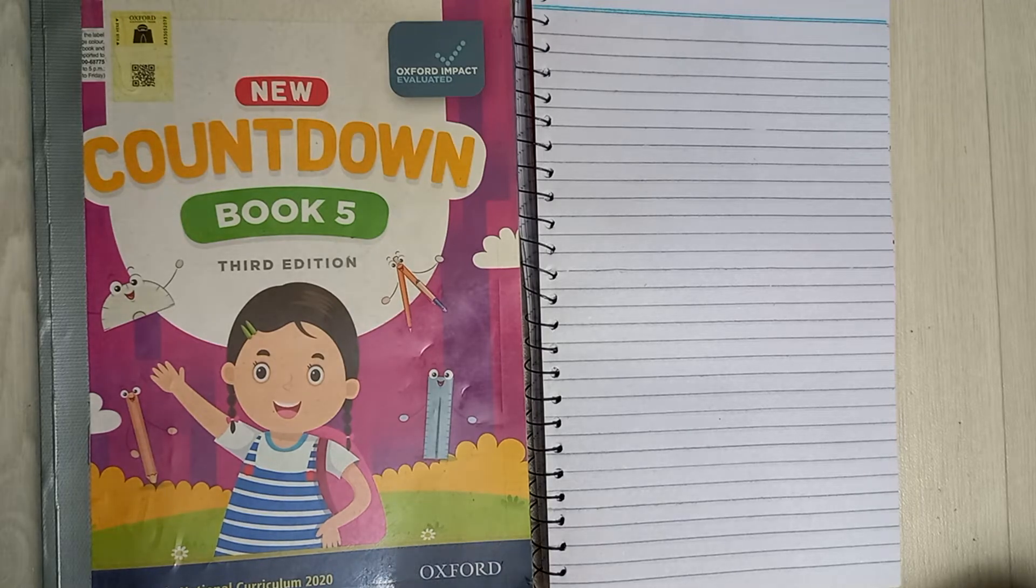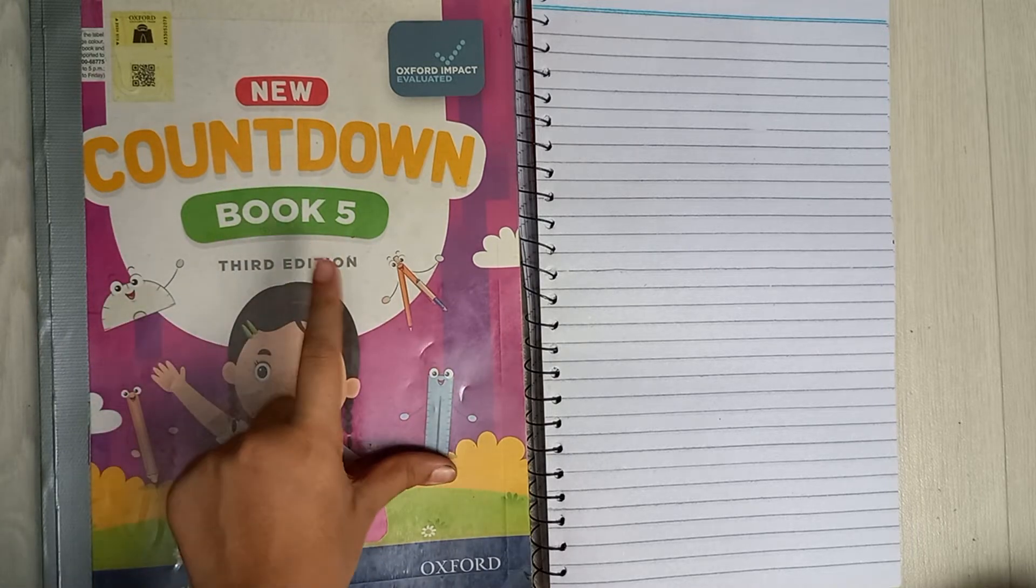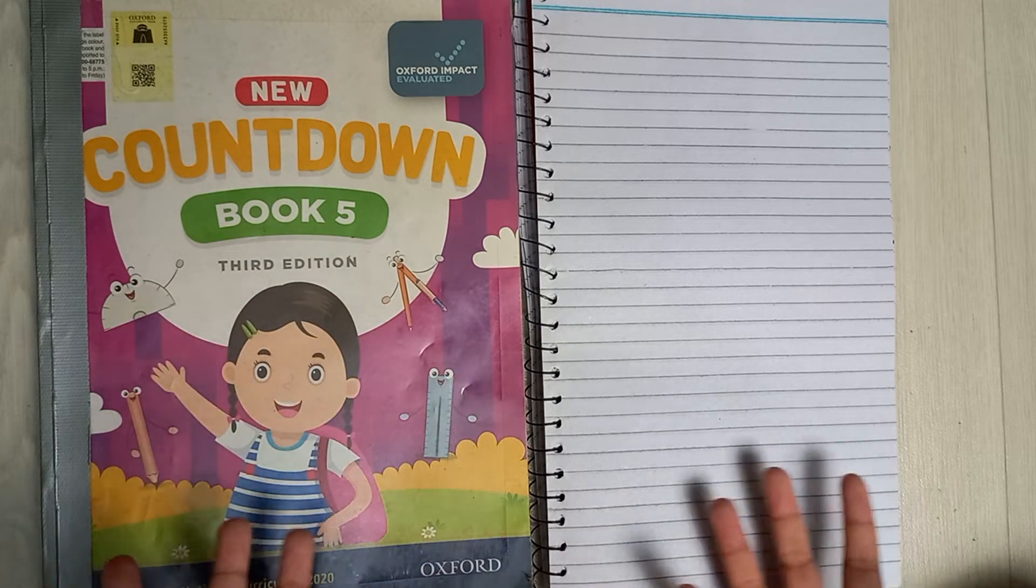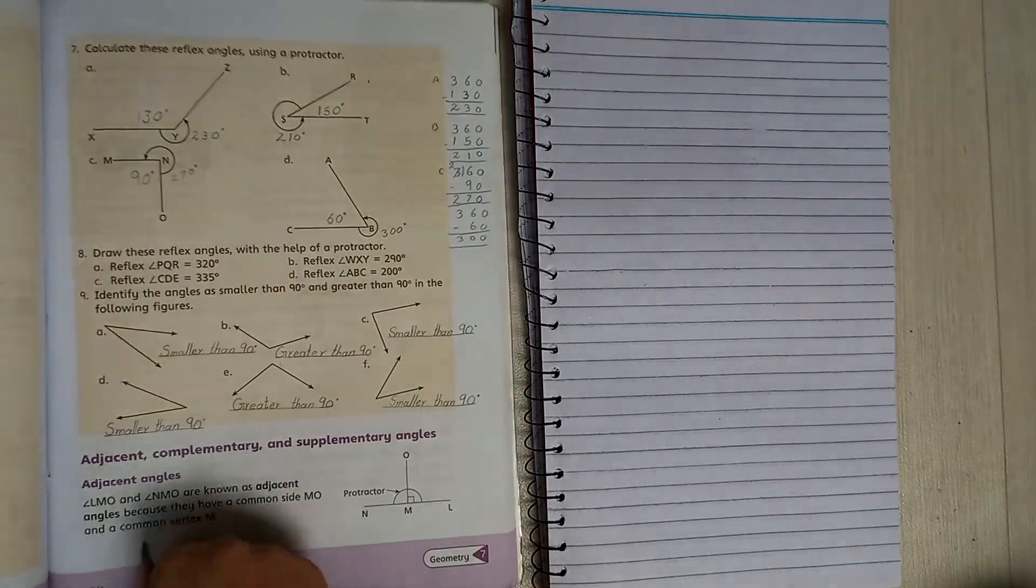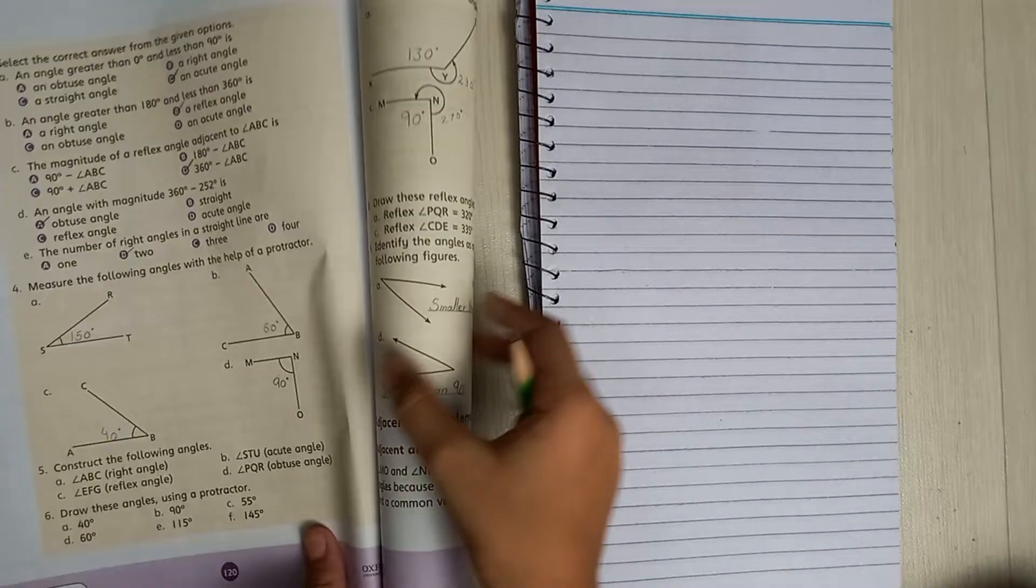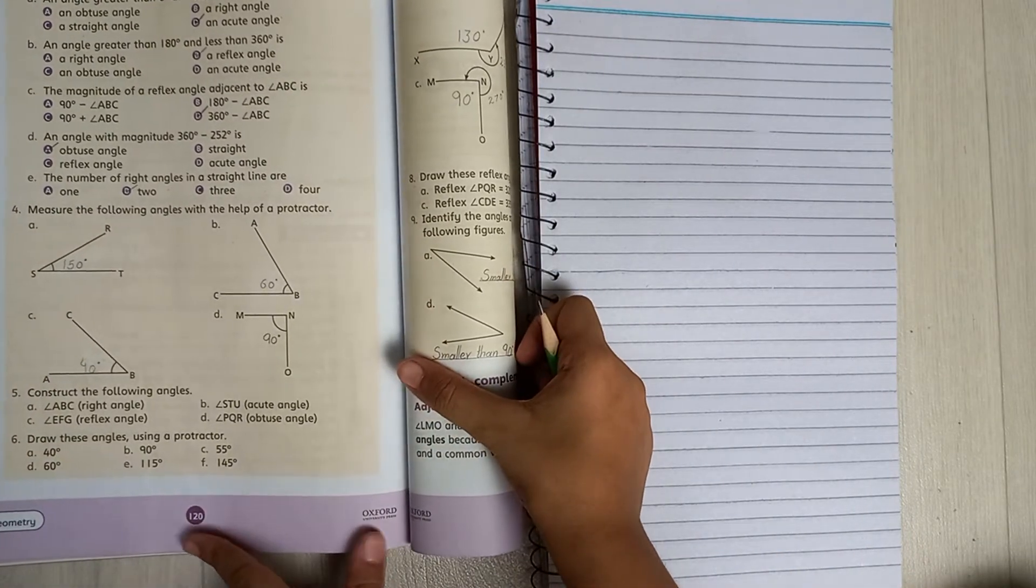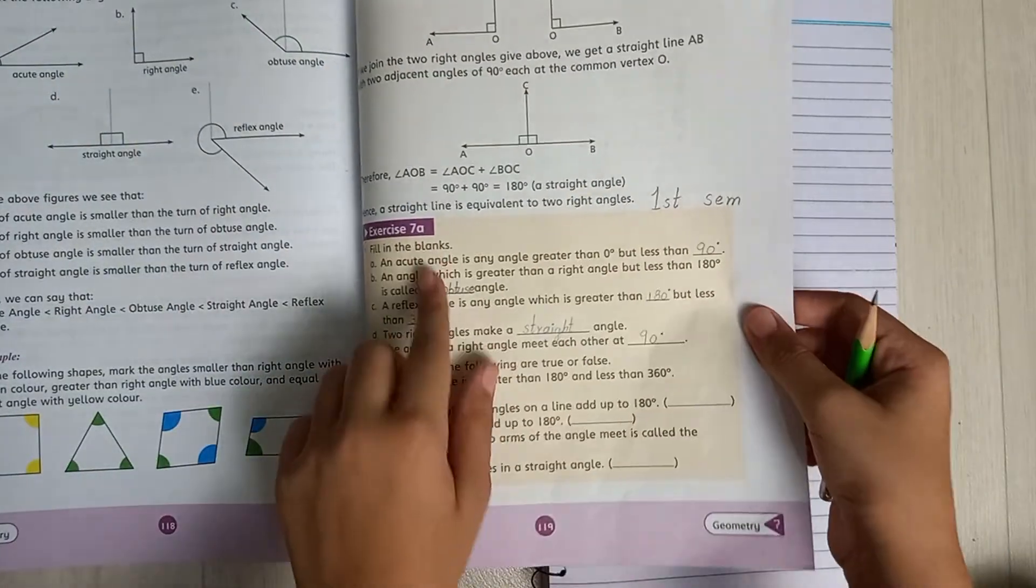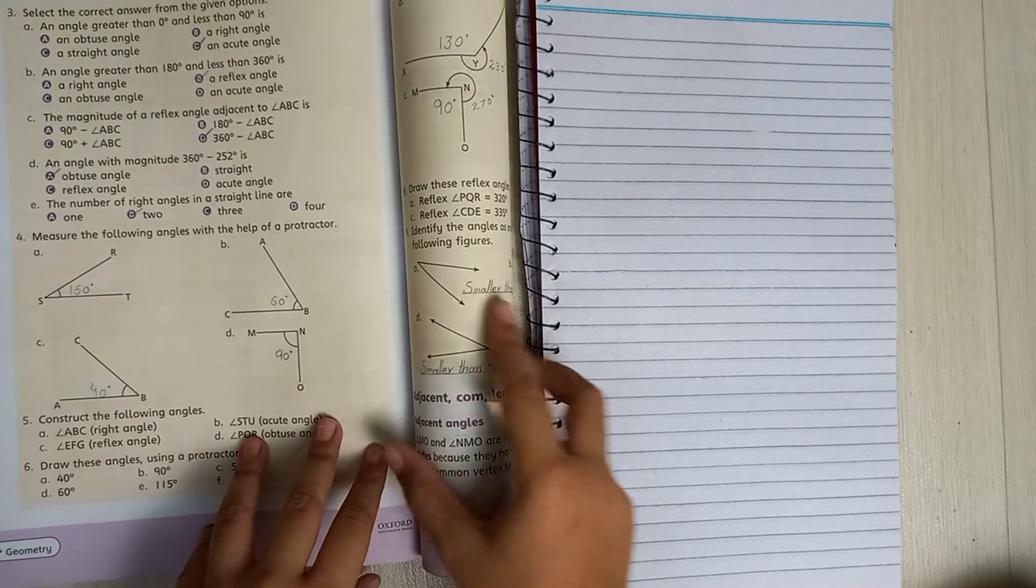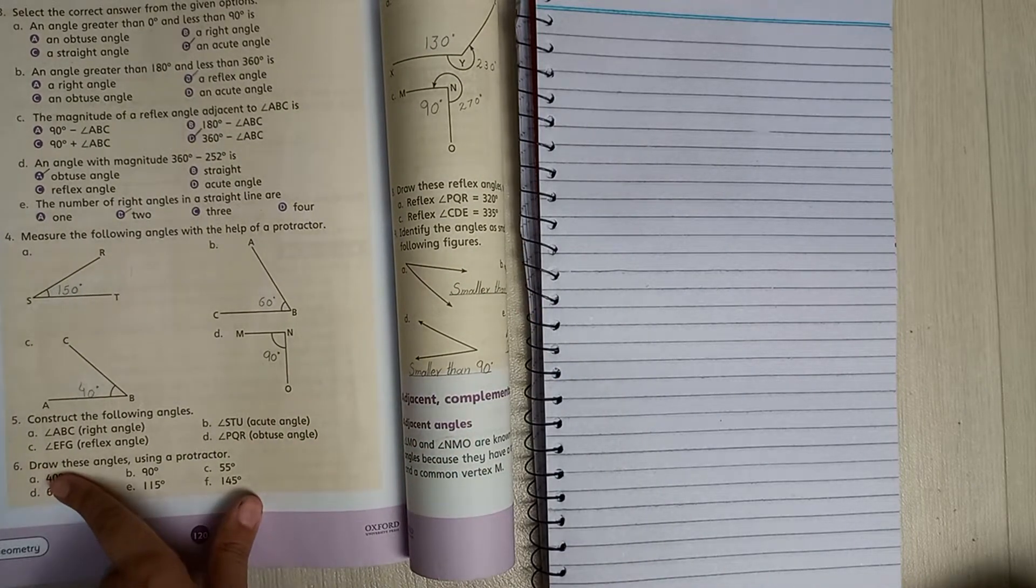In this video, we are going to work on Oxford Countdown Book Five, Third Edition. The page is 120, and our chapter is Geometry Exercise 7A. Our question is question number 6.